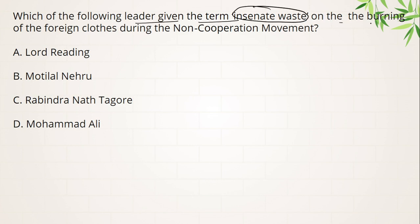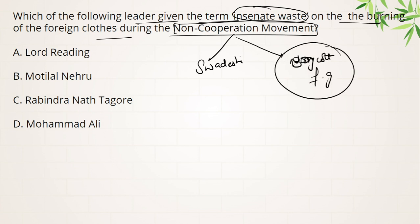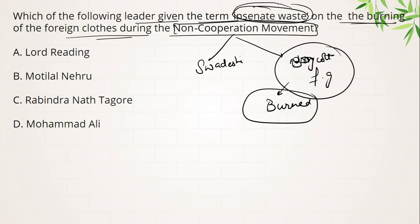Next — which of the following leader gave the term 'incident waste' for the burning of foreign clothes during the non-cooperation movement? During the non-cooperation movement, Swadheshi movement, or civil disobedience movement, a common Congress agenda was to use swadeshi goods and boycott foreign goods — which were burned. Remember, the right answer is Rabindranath Tagore, who called this burning of foreign clothes 'incident waste' at that time.